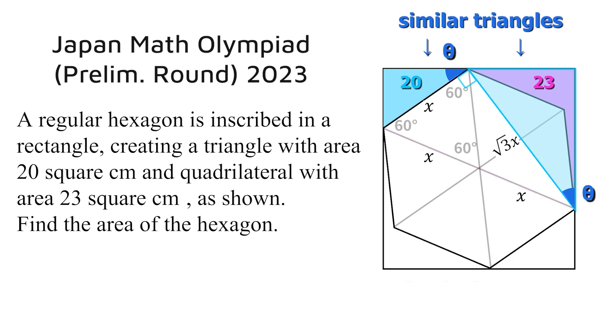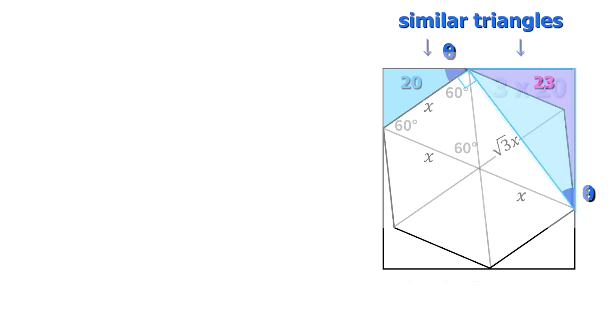So now we know the scale factor of the two triangles is root 3, meaning the larger triangle, all the side lengths are root 3 times larger than in the smaller triangle. For the area we need to square that, so the area would then be 3 times the smaller area, that's 60.